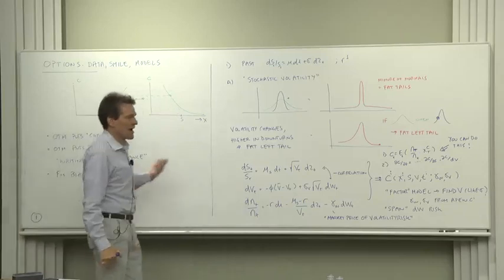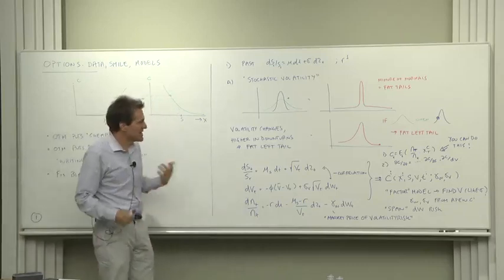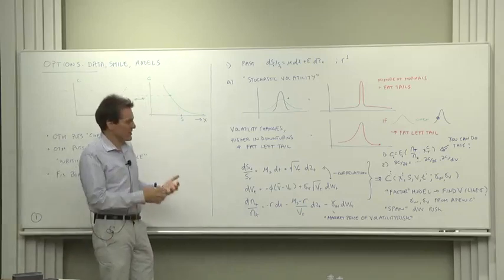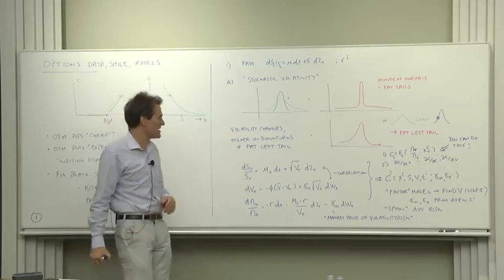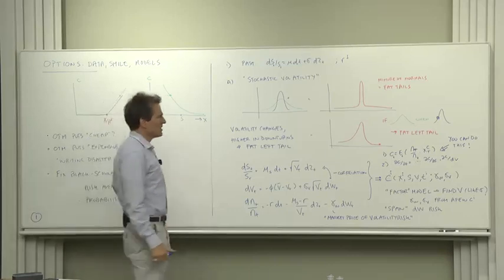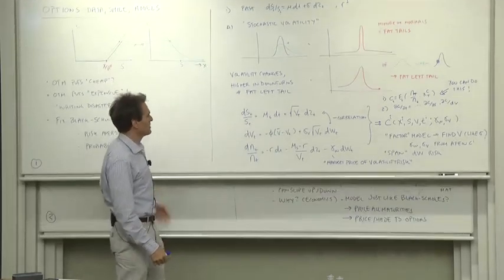So how can we put that into equations? We need stochastic volatility, and we need volatility to go up in bad times, which is a good thing. That's what we see. Well, here's a structure that puts that in place.